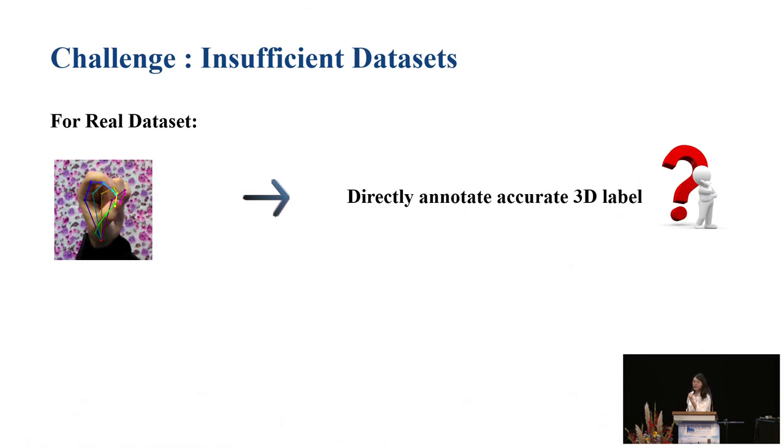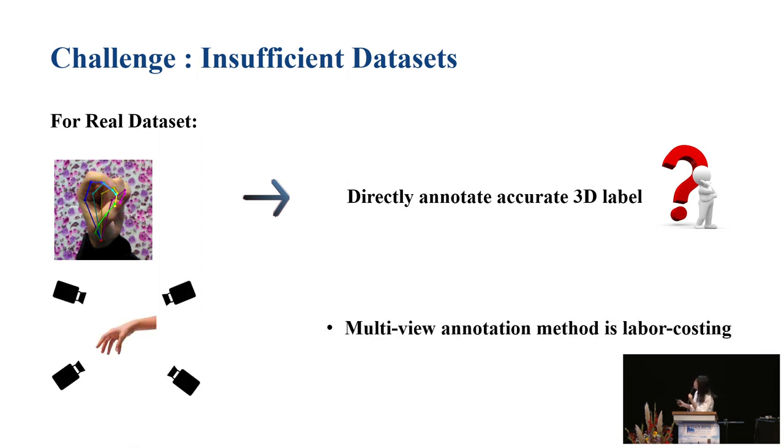However, it is a quite challenging work, and one of the most challenging points is insufficient datasets. For our human eyes, although we can manually annotate the 2D joints ourselves, it is very hard to directly annotate the 3D labels because we can only roughly predict the 3D gesture. If we need to measure it in millimeters error, it is very hard to get accurate results. Multi-view annotation methods are labeling-costly and time-consuming, and the reconstructed 3D labels may not be quite perfect and require further calibrations.